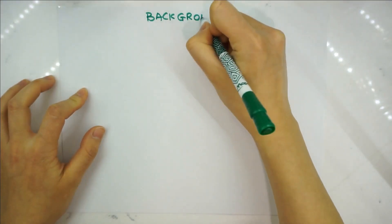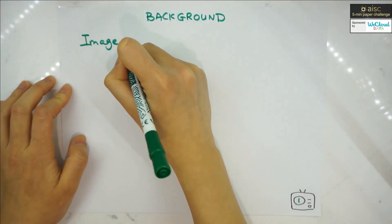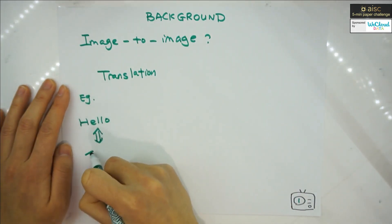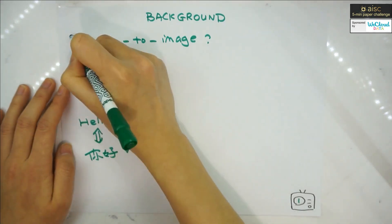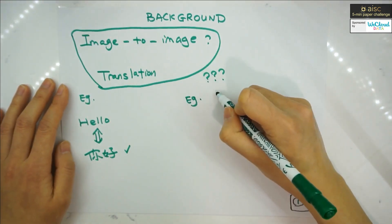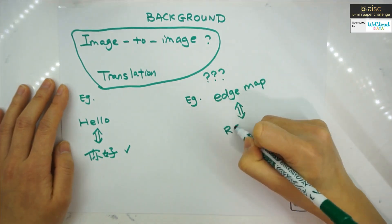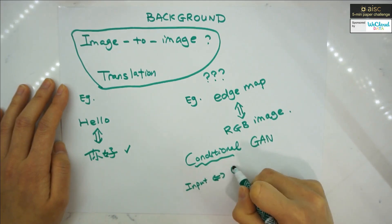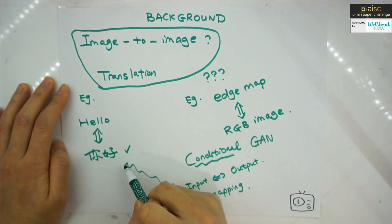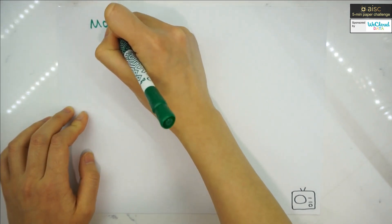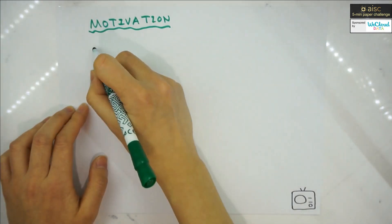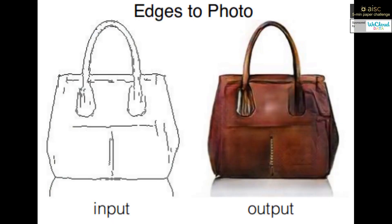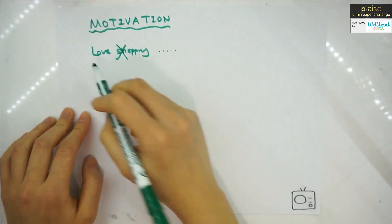Here's a bit of background: what is image-to-image translation? Think of translating a language — like 'hello' to the Chinese 'ni hao.' Similarly, the input here becomes an edge map and the output becomes an RGB image. The conditional GAN maps input to output. Some motivations might be things like shopping applications or March Madness.